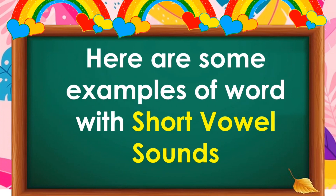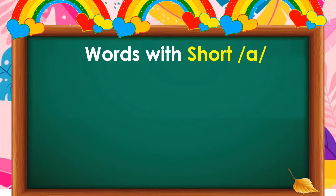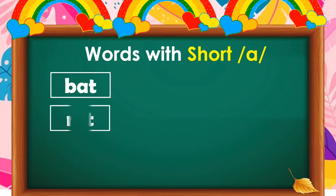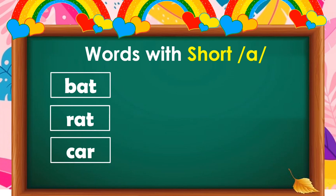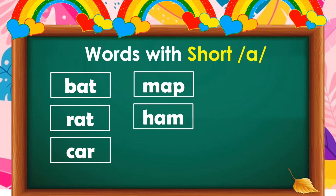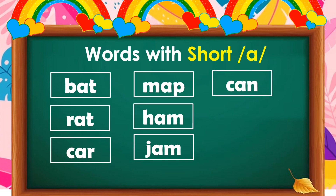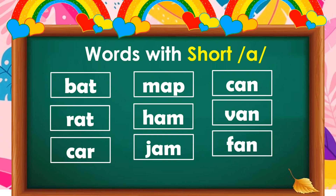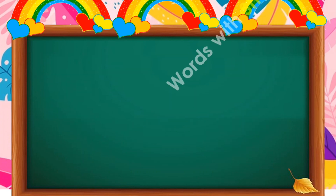Here are some examples of words with short vowel sounds. Let's begin with words with short A, or the A sound. Kids, let's read together. Very good!